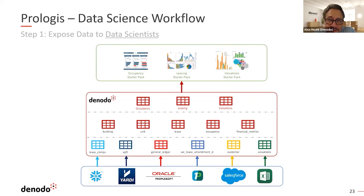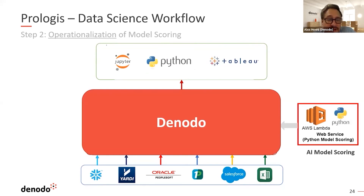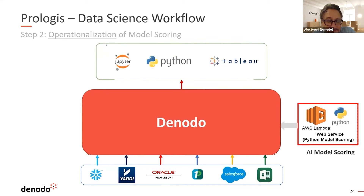After the data preparation work is finalized, they also use Denodo for the operationalization of their learnings. Denodo acts as the middleware layer connecting to different data sources and also consuming results from AI model scoring, then exposing those results to analytical tools like Tableau and Qlik. So Denodo is used in multiple ways — not only to train the model but also to operationalize its usage.